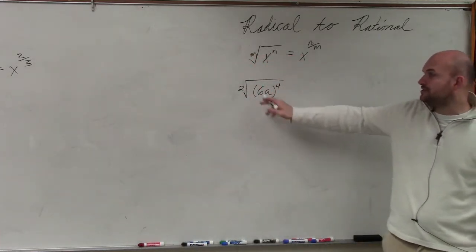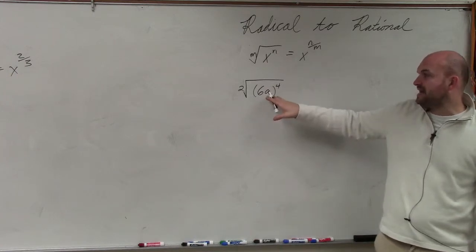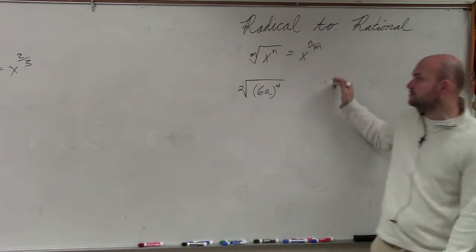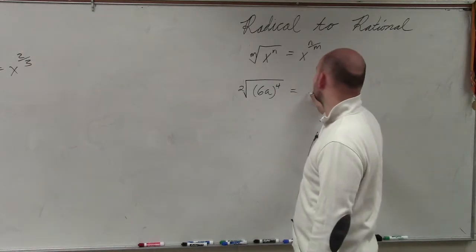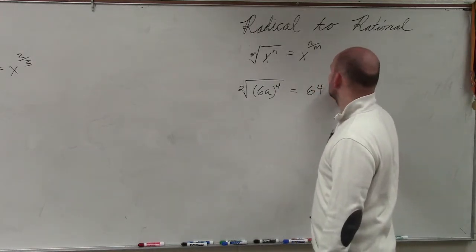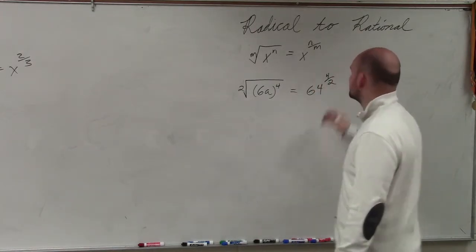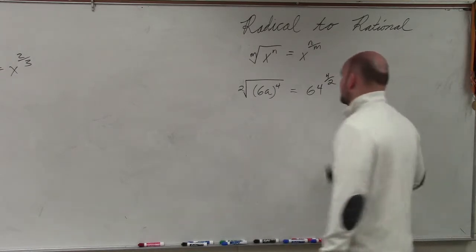Now, basically what I can do is here is my base. That's the power, and that's the exponent. So using this rule, I can rewrite this as 64 to the 4 halves. I'm sorry, what am I doing? 6a.